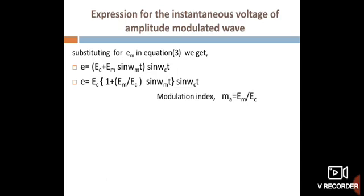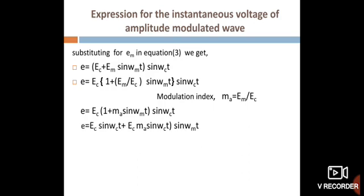Modulation index is defined as the ratio of maximum peak value of modulating signal to the maximum peak value of carrier signal. That means: ma = Em / Ec. Therefore, E = Ec [1 + ma sin(ωm t)] × sin(ωc t). Expanding, E = Ec sin(ωc t) + Ec·ma sin(ωm t) × sin(ωc t).